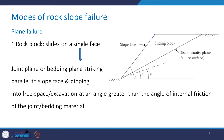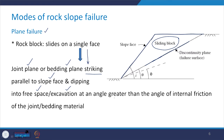In the case of plane failure, the rock block — the sliding block — slides on a single plane. This single plane can be a joint plane or a bedding plane which is striking parallel to the slope face and dipping into free space or excavation at an angle greater than the angle of internal friction of the joint or bedding material, shown here as angle phi.